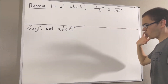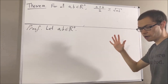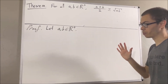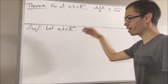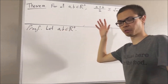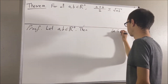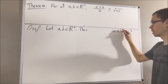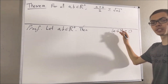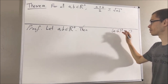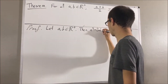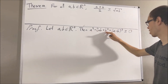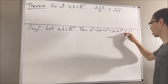Now, to start, we know that the square of any real number is greater than or equal to zero. So, in particular, the square of a minus b is greater than or equal to zero. And we know that a minus b squared is equal to a squared minus 2ab plus b squared. So, we have that a squared minus 2ab plus b squared is greater than or equal to zero.